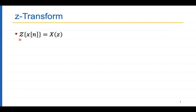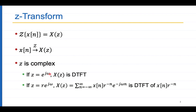The Z-transform of a sequence x[n] is X(z). Z is a complex number; if it is e to the power j omega with unit magnitude, then X(z) is just the DTFT. But if z is r times e to the power j omega where r is not 1, then it is the general Z-transform, which equals the DTFT of x[n] times r to the power minus n. So the Z-transform is the DTFT of a scaled version of the sequence.